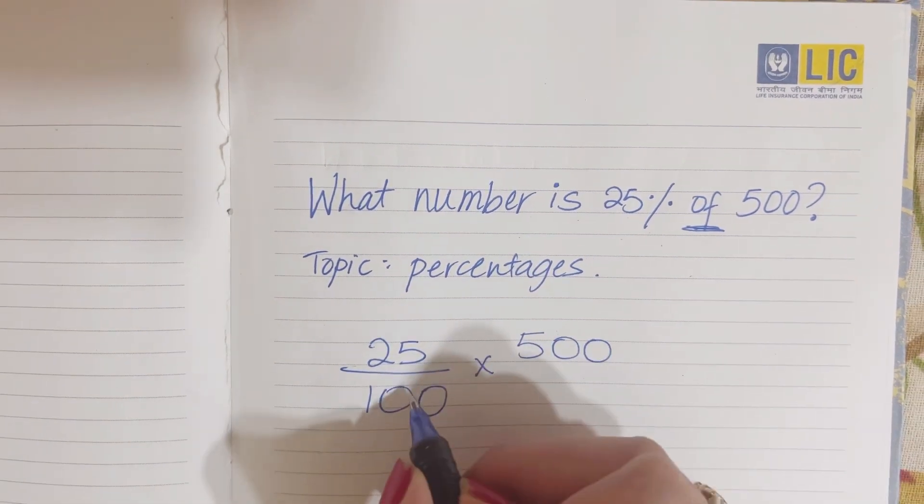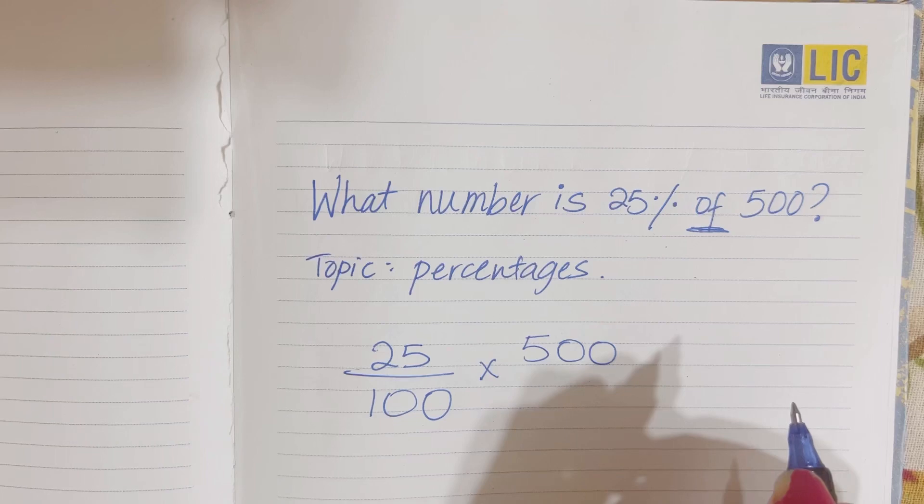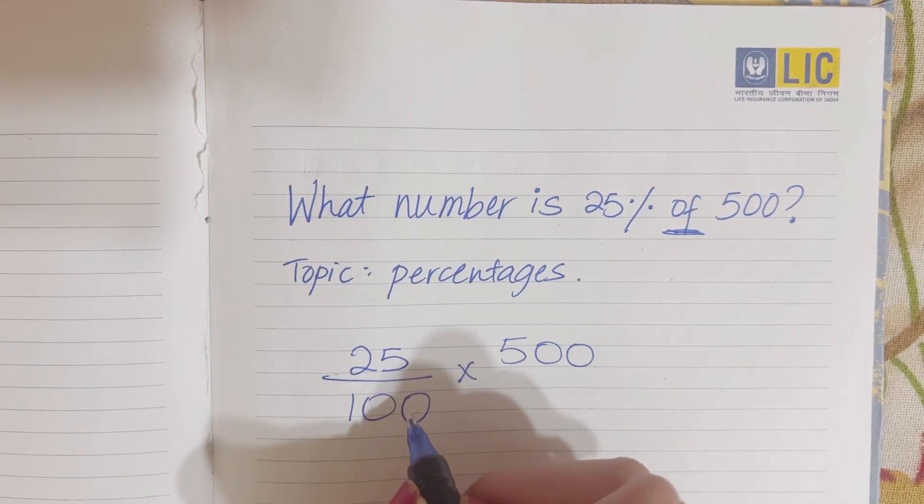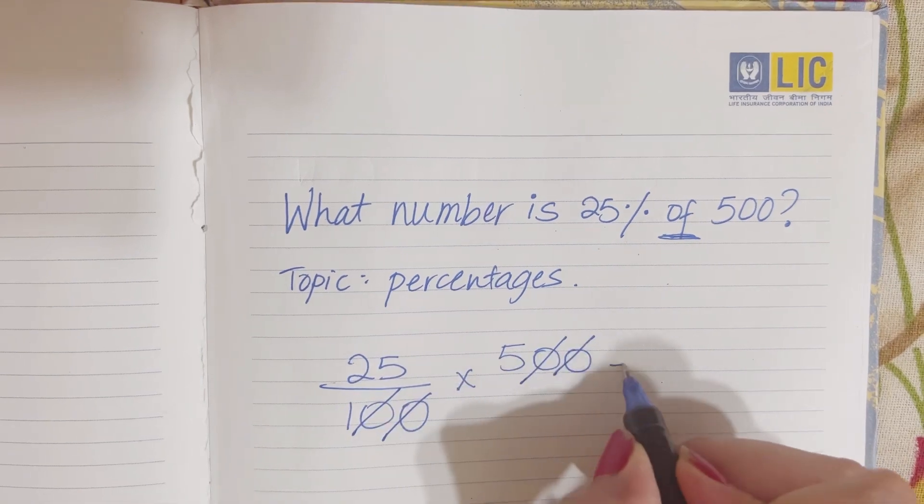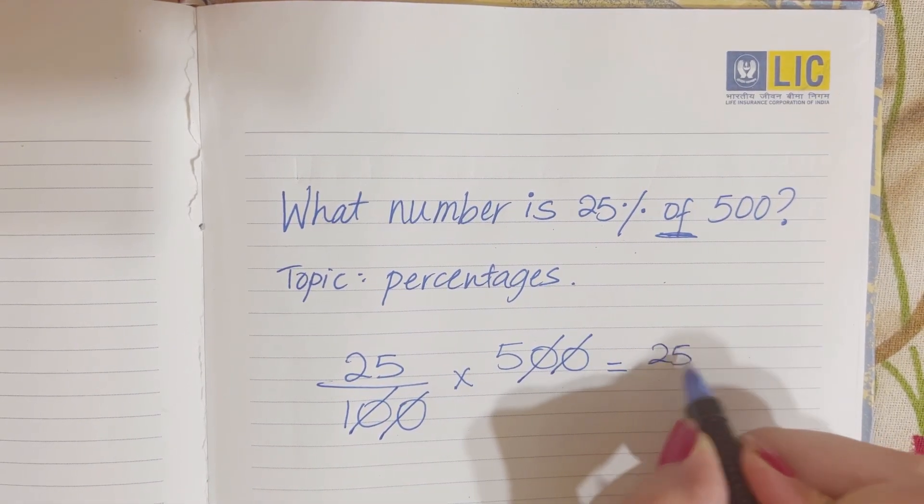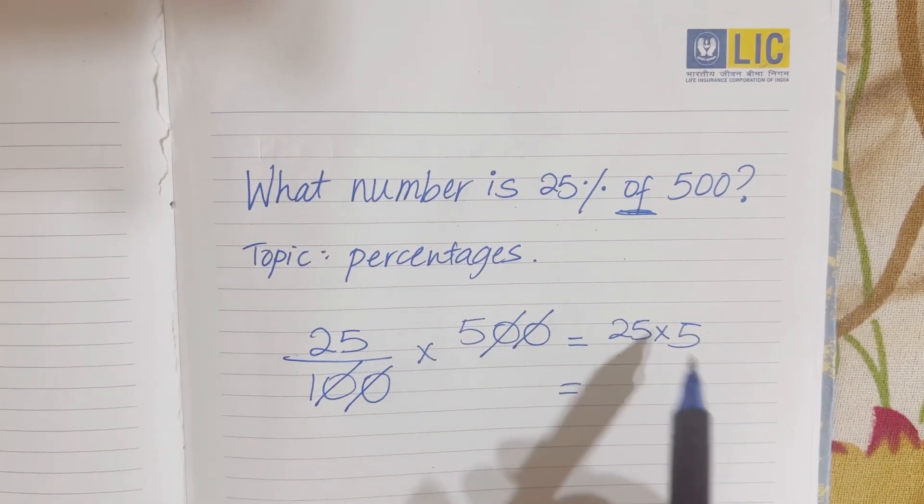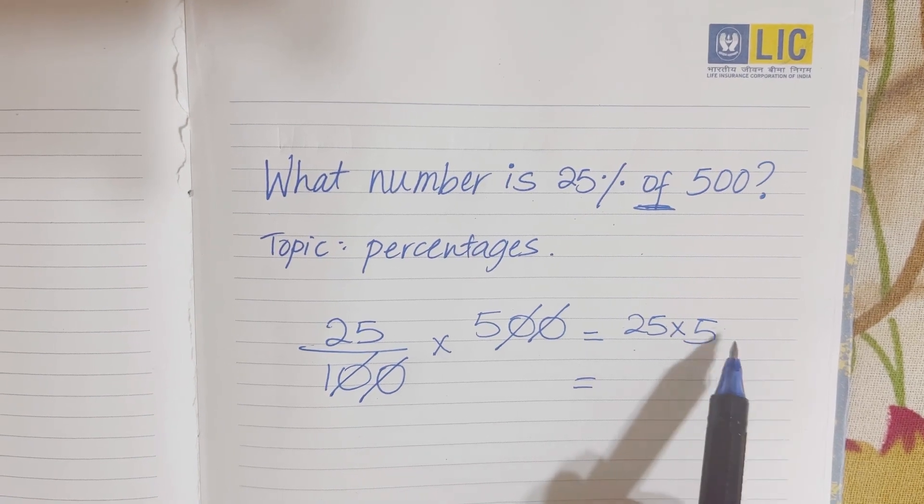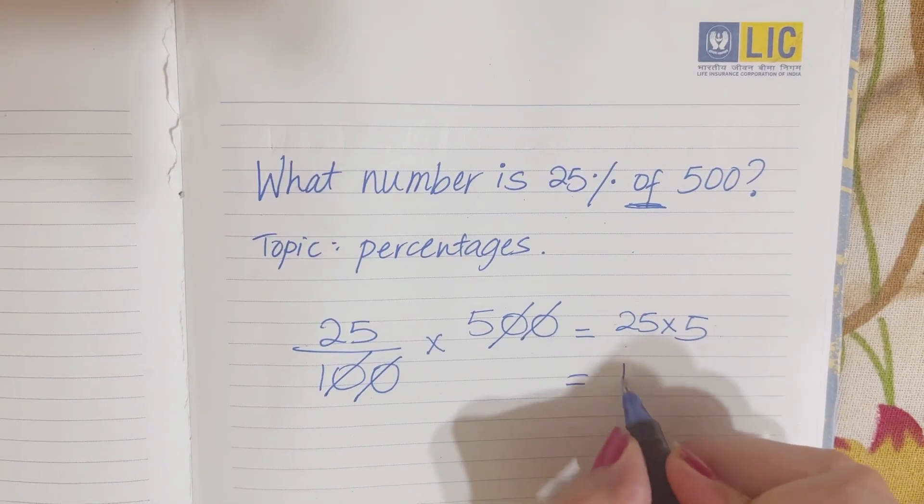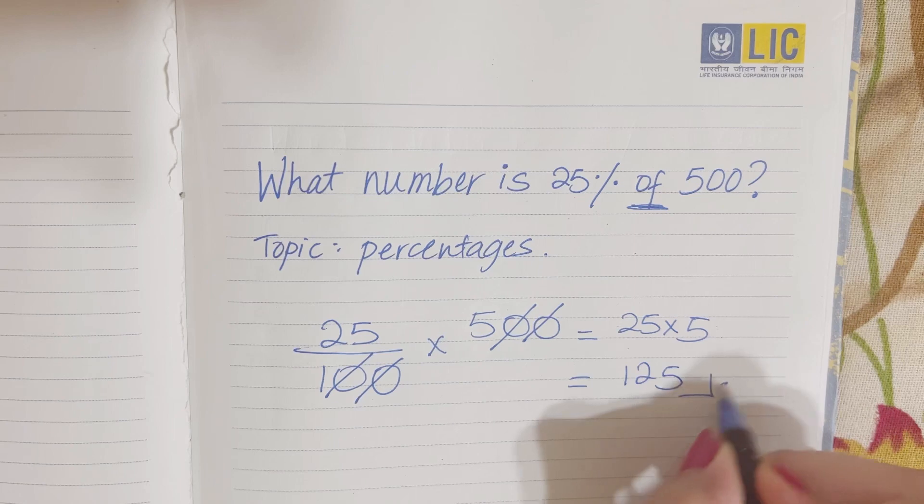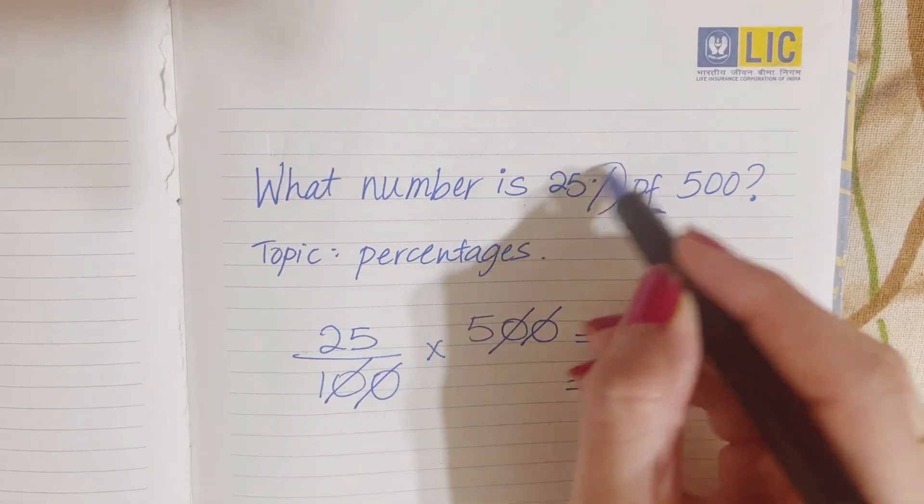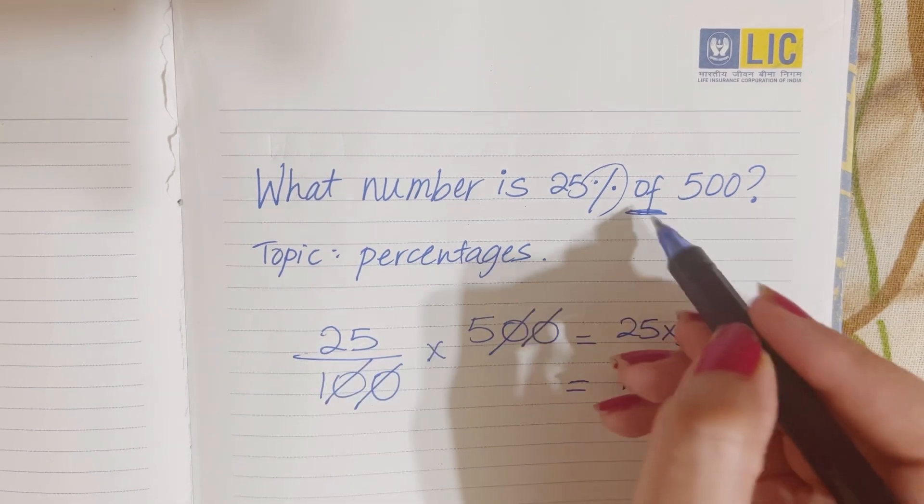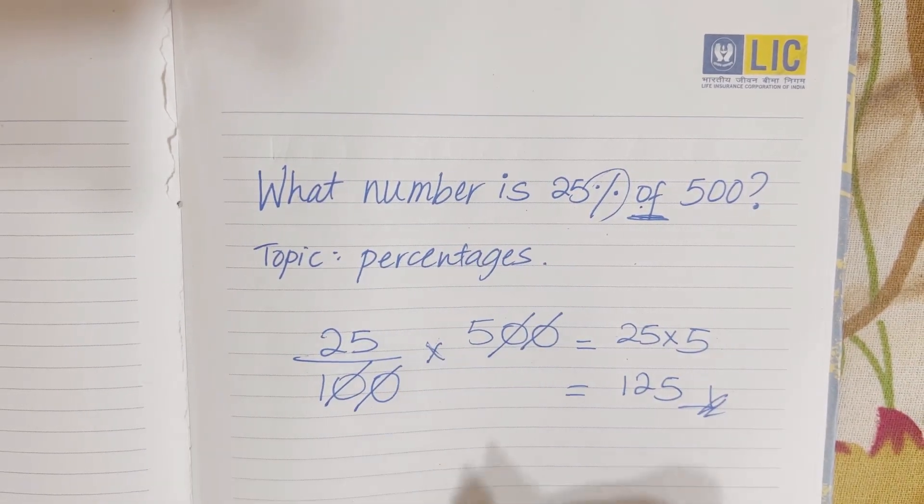Now you just want to simplify it or just put it in the calculator straight. We're going to remove the zeros, and now we do 25 multiplied by 5, which is 125 when you put it in the calculator. So that's our answer. Very easy. Remember, percent means divided by 100, and of means multiplied.